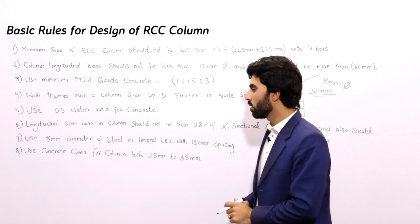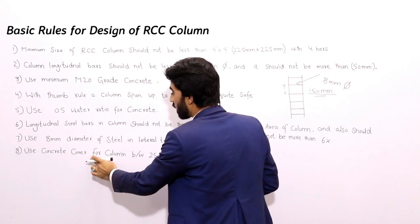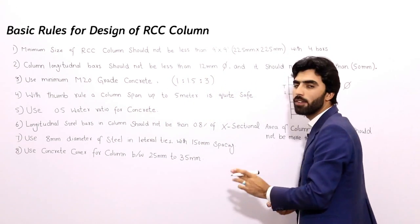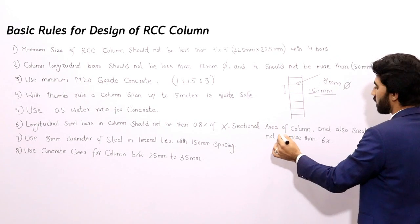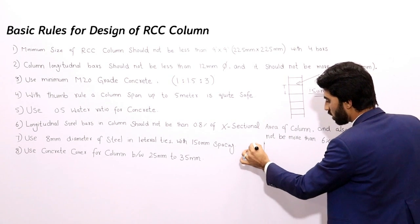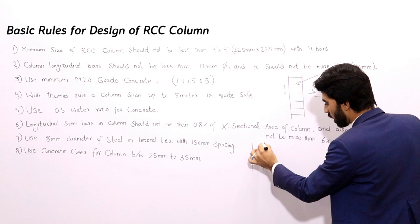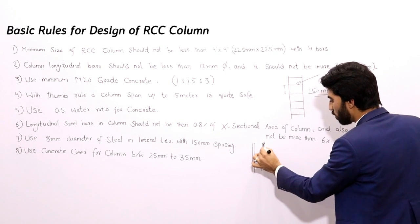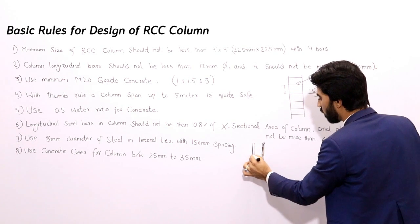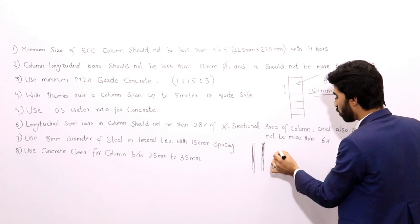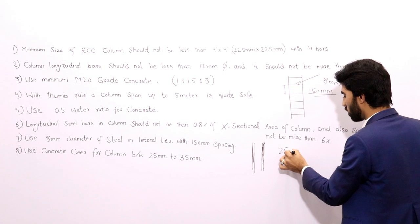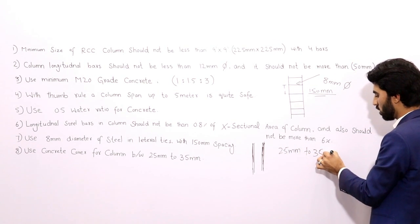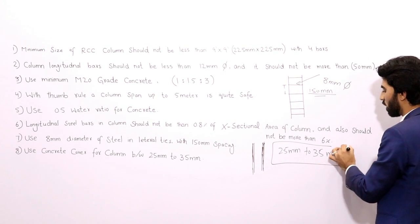The eighth and last rule: use a concrete cover for the column between 25 mm and 35 mm. This is the cover between the outer surface of the column and the longitudinal bars. The concrete cover for an RCC column should be in the range of 25 to 35 mm.